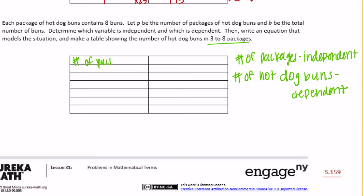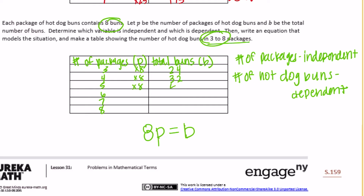Let's set up our table: number of packages (P) and total buns (B), from three to eight packages: three, four, five, six, seven, eight. There are eight buns in each package, so we multiply the number of packages by eight to get the total buns. Three times eight is twenty-four buns. Four times eight is thirty-two buns. Five times eight is forty buns. Six times eight is forty-eight buns. Seven times eight is fifty-six buns. Eight times eight is sixty-four hot dog buns.